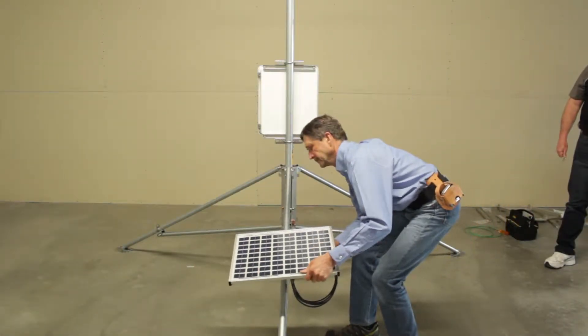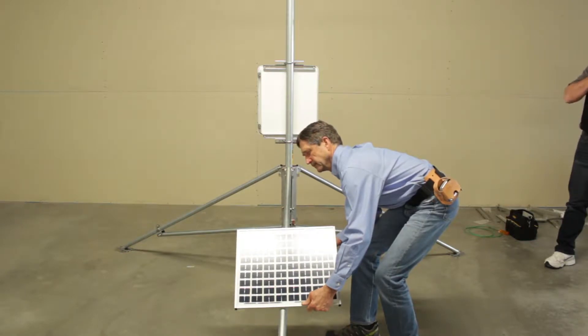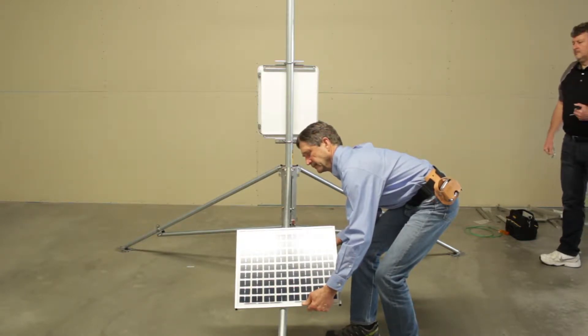The bracket on the solar panel allows it to be mounted on one of the tripod legs, or on the mast. This video shows the solar panel being mounted to the mast.